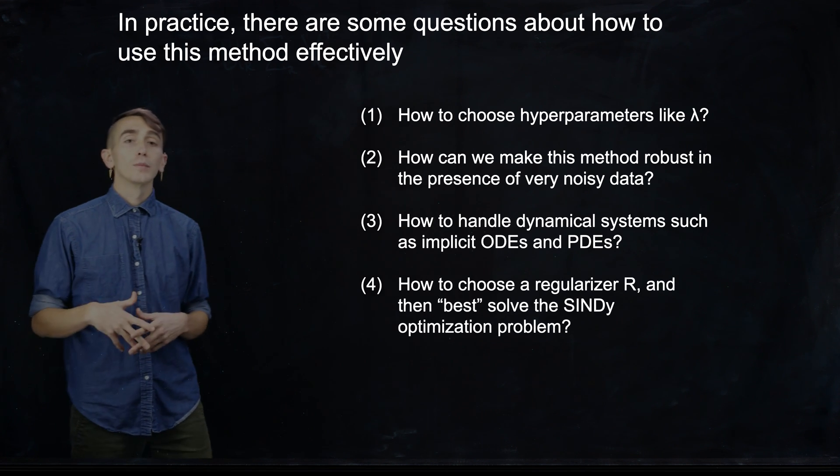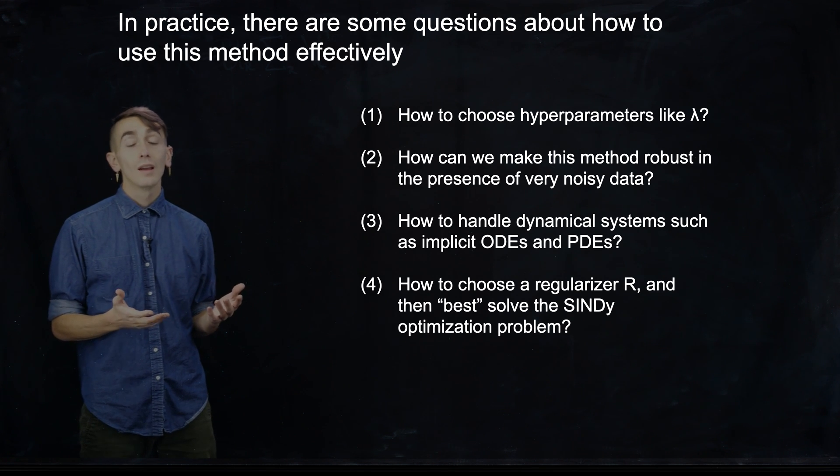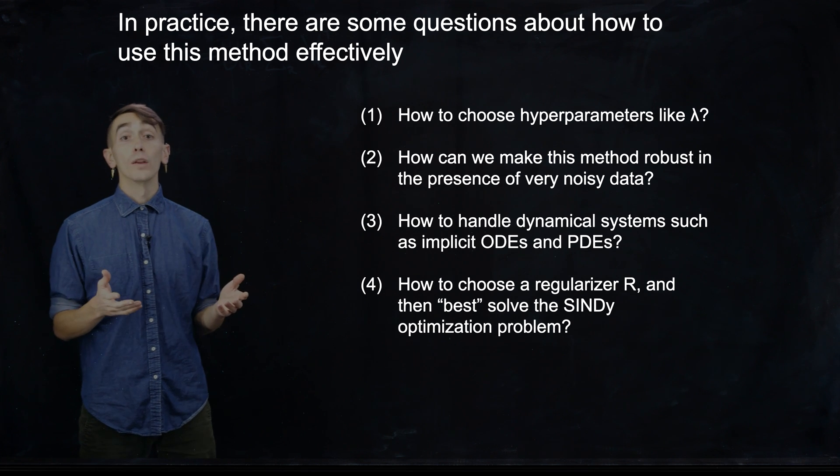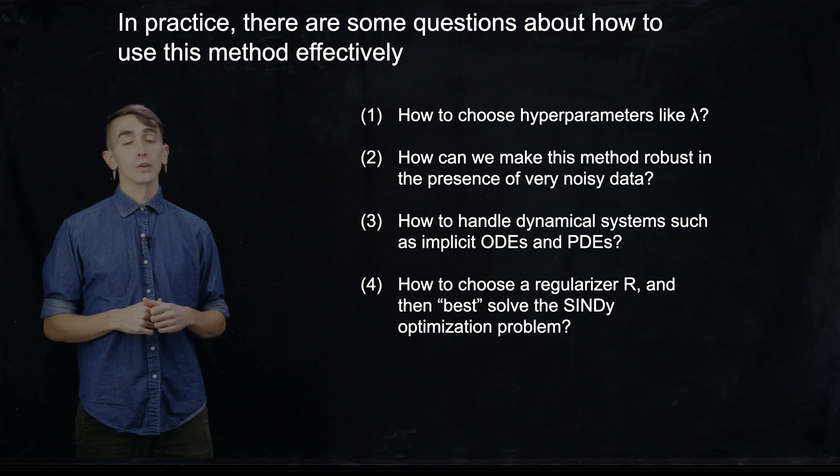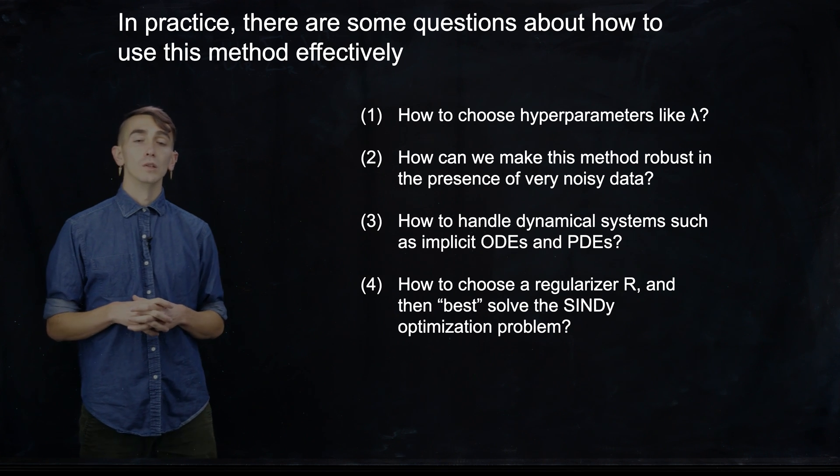Then another question that comes up is how to actually choose what regularizer to use in the optimization. And then once you've chosen that regularizer, say you want to use the L1 norm, how do you then best solve that optimization problem? So there are a number of different sparse regression algorithms that allow you to solve the optimization. And so how do you actually choose which one you want to use based on the characteristics in your data?